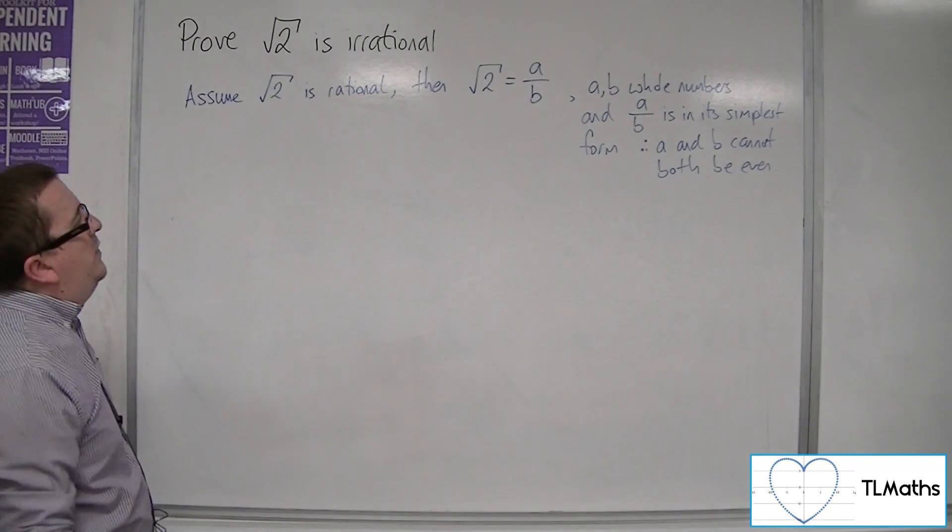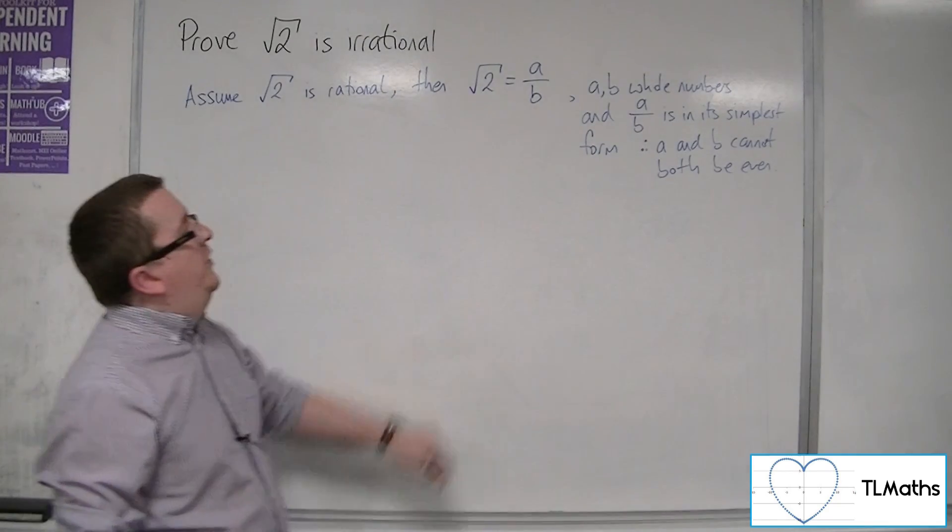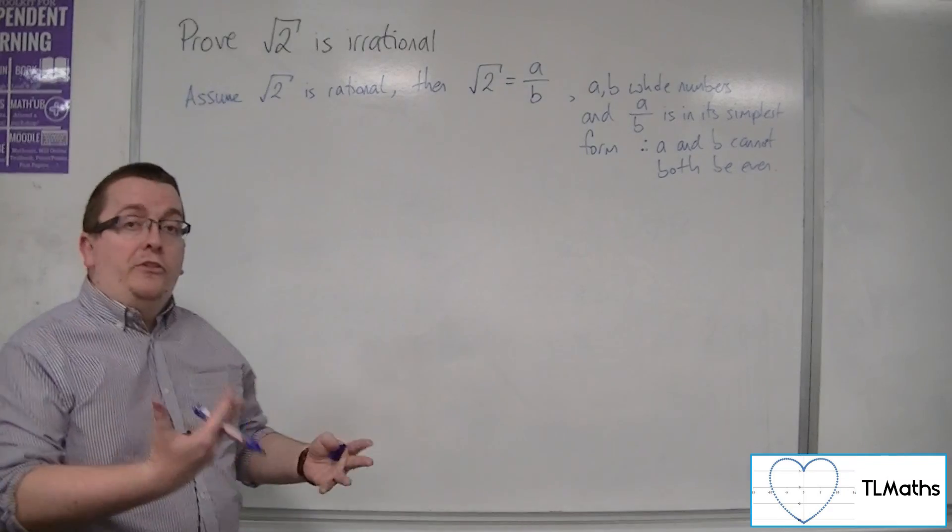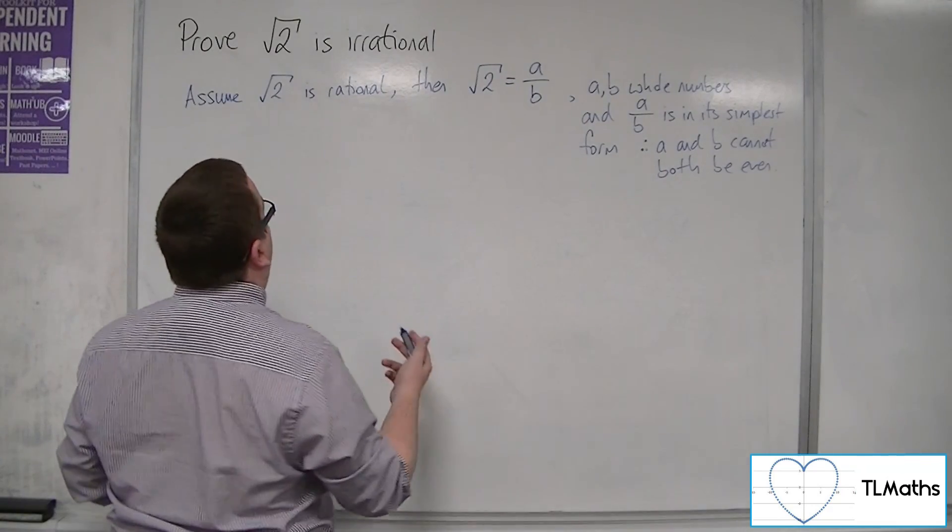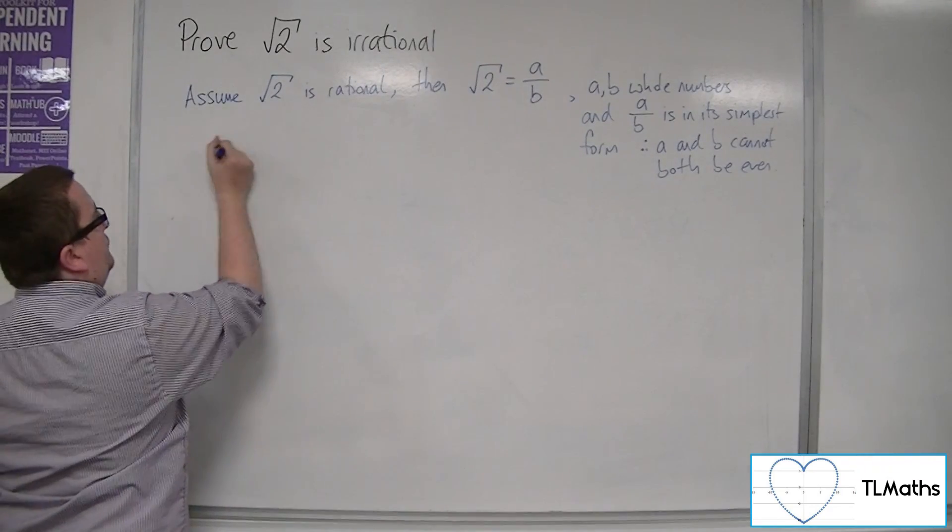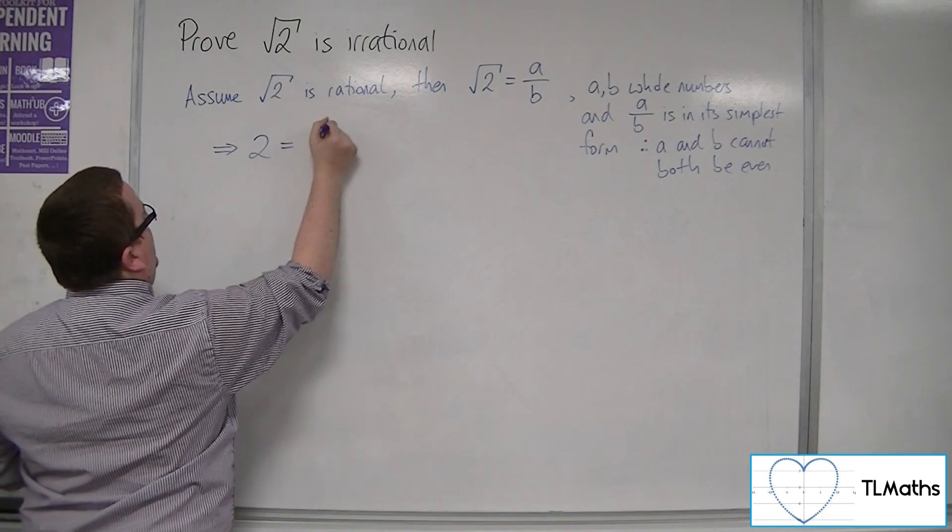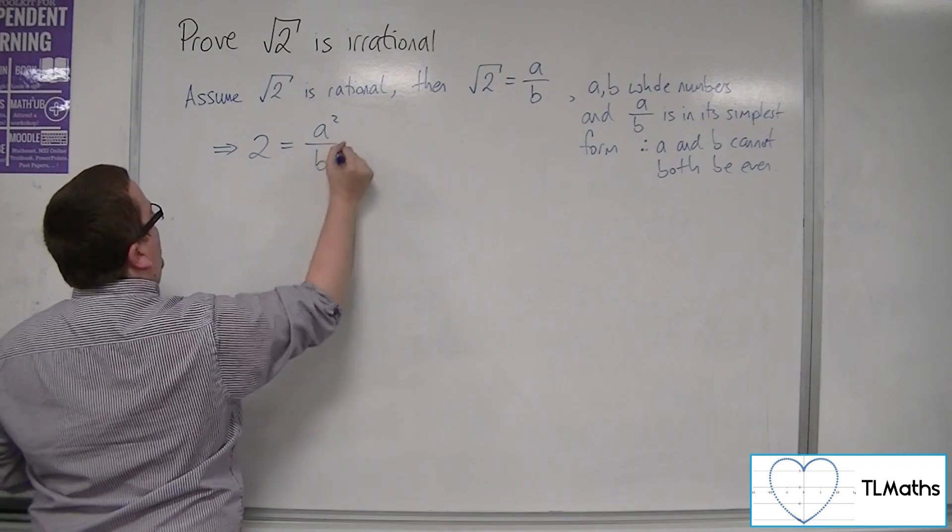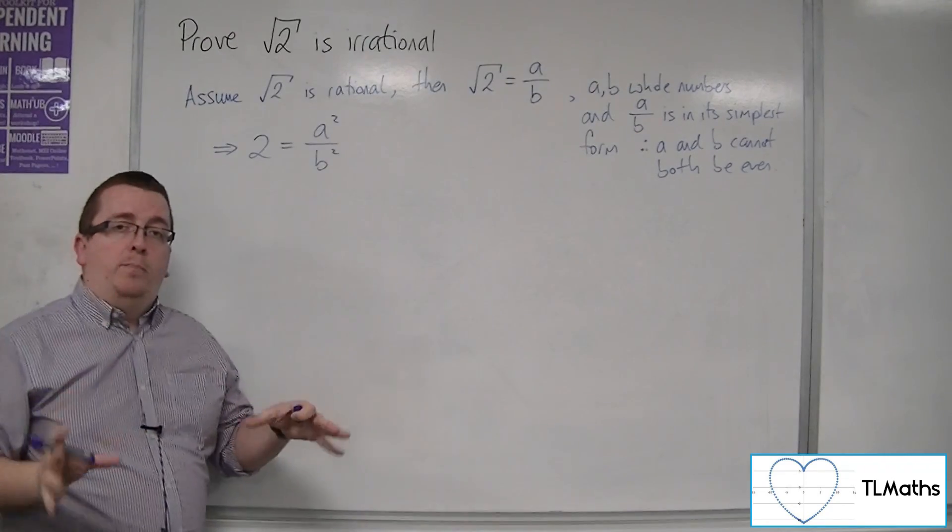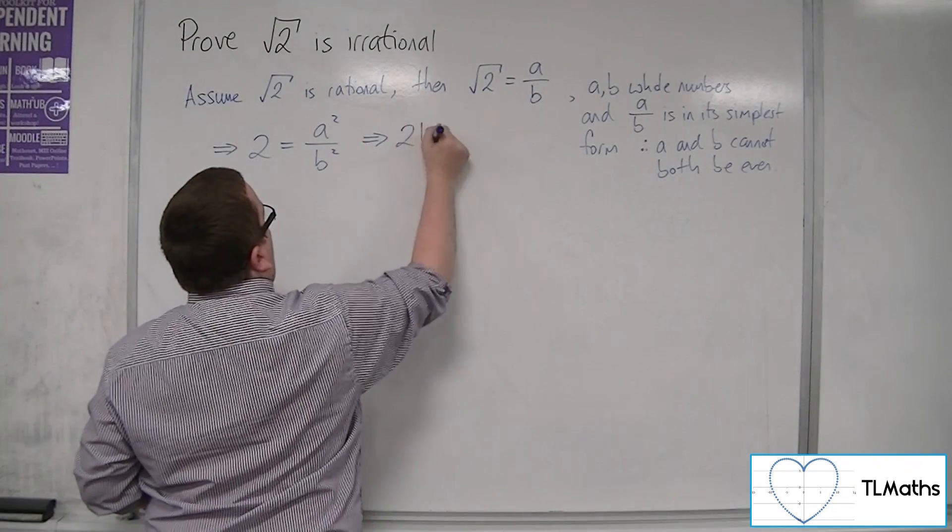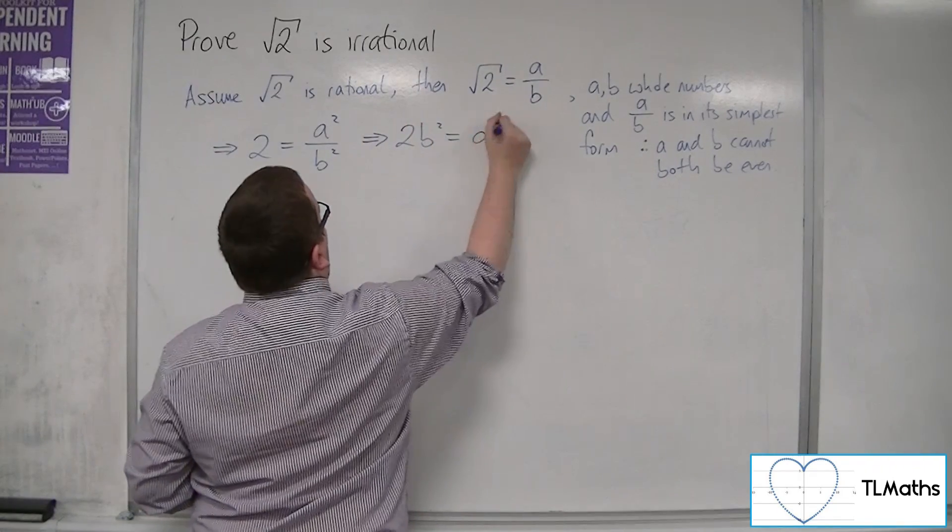Okay, so if we've got root 2 is a over b, then what I could do is I could square both sides. So I could say, right, then 2 must be a squared over b squared. And then I could multiply both sides by the b squared. And I could say 2b squared is equal to a squared.